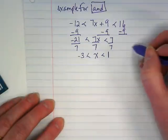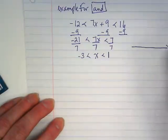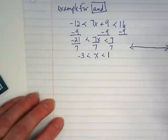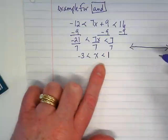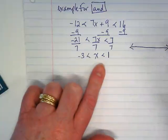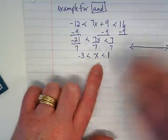Does that make sense? Negative 3 is less than x is less than 1. Are we gonna divide everything by negative 3? No, we already did that with 7. The x is by itself so now we can graph it.